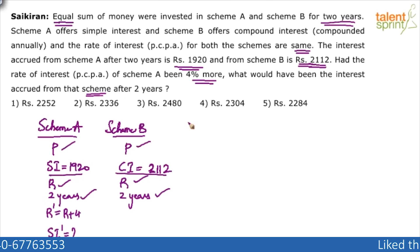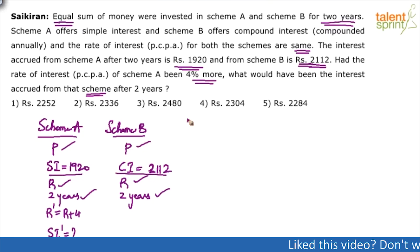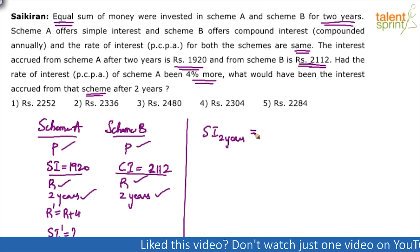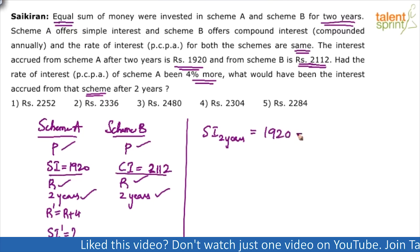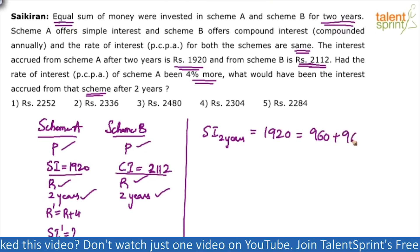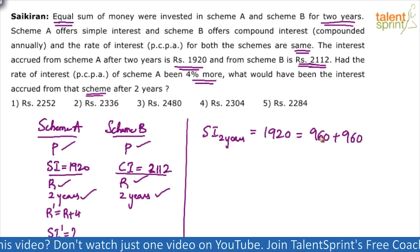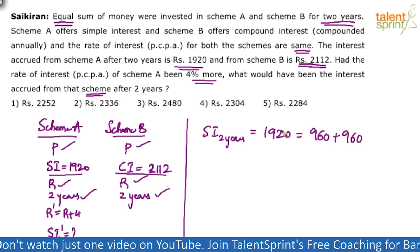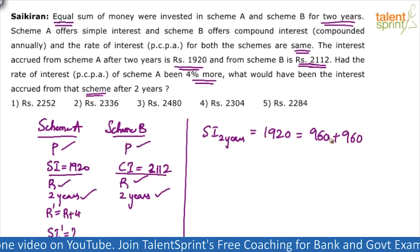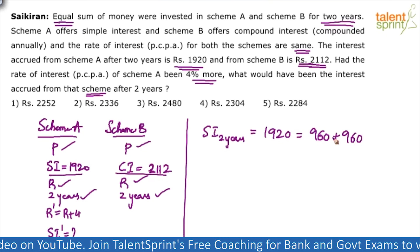Smart method: the simple interest for two years equals 1920, which can be taken as 960 plus 960. Why? Because in simple interest, the interest is the same every year — first year 960, second year 960. So I'm taking 1920 as two halves: 960 plus 960.